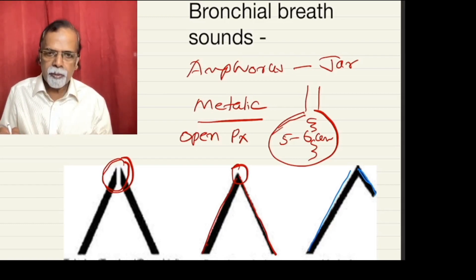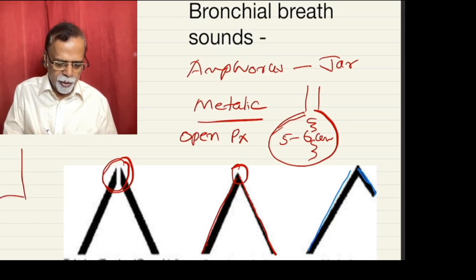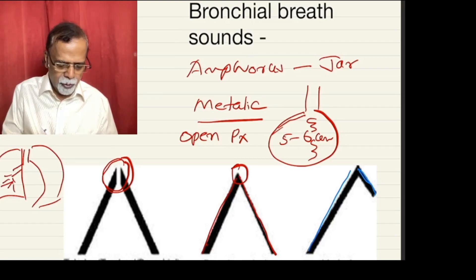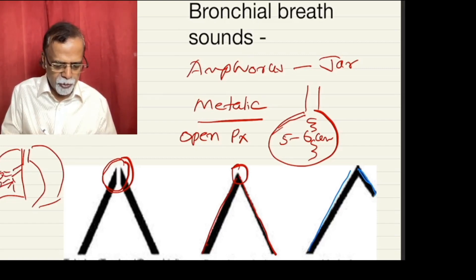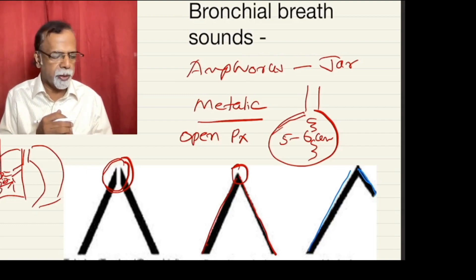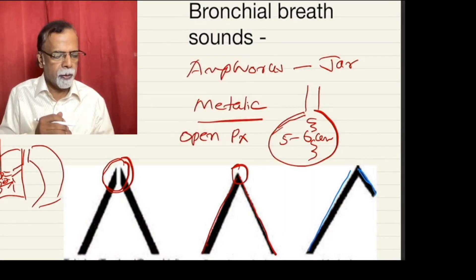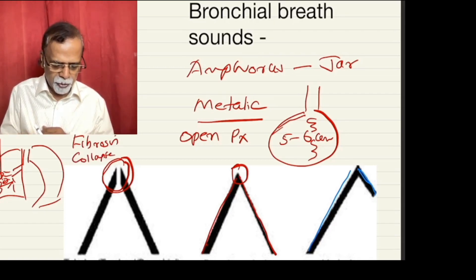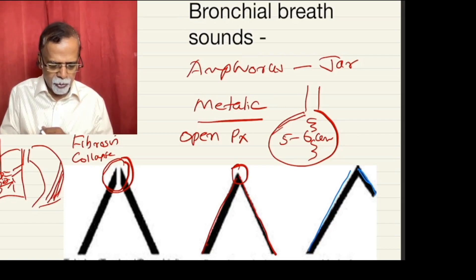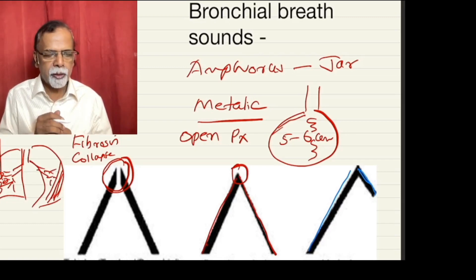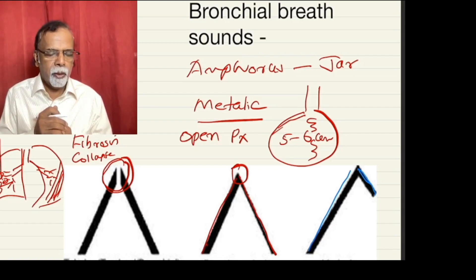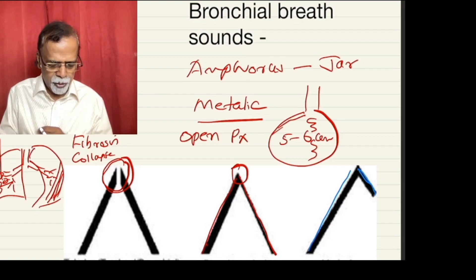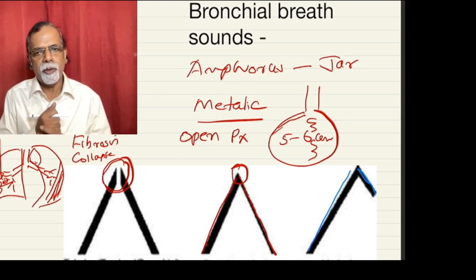Regarding tubular breath sound, as already mentioned, when the lung is consolidated and the bronchus is patent, the consolidated lung is a good medium for conduction of sounds, so you get bronchial breathing. Sometimes in fibrosis of the lung, collapse of the lung, or large pleural effusion where the underlying lung may be collapsed but the bronchus is patent, again you can get bronchial breathing. Sometimes even in a mediastinal tumor which is in apposition with a large bronchus, you can get bronchial breathing.